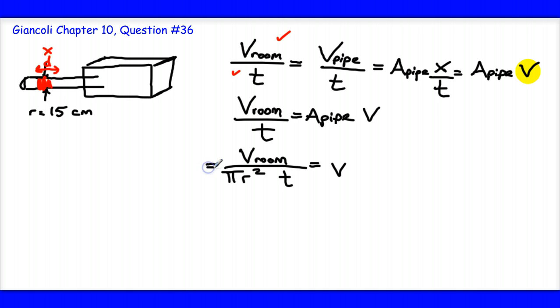Let's go ahead and plug some numbers in now. And so therefore, for the numerator, or the volume of the room, I'm going to get 9.2 meters by 5 meters by 4.5 meters.